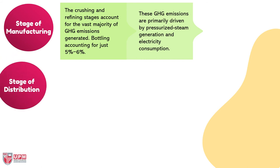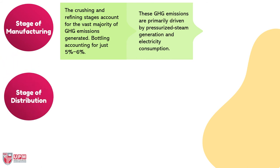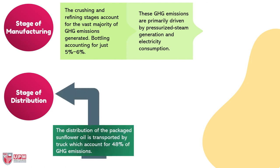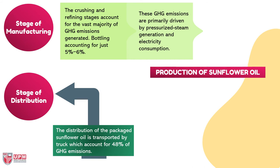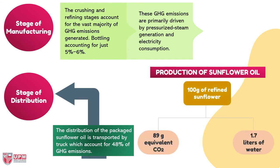For the distribution stage, the distribution of packaged sunflower oil transported by truck accounts for 48 percent of greenhouse gas emissions. As a result, for the production of 100–300 grams of refined sunflower oil, this accounts for 89 grams of equivalent carbon dioxide and 1.7 liters of water.